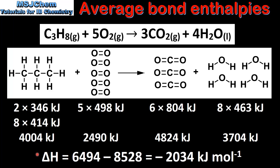To calculate the enthalpy change for the reaction we add together the total bond enthalpies for the reactants and subtract the total bond enthalpies for the products. We have a total of 6494 kJ for the reactants and 8528 kJ for the products, giving us an enthalpy change of negative 2034 kJ per mole.